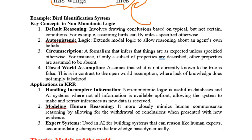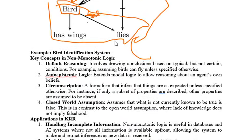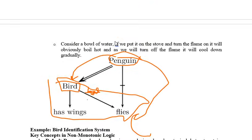The next application is modeling human reasoning. This completely depends on human common sense and new evidence. If you make a conclusion, it should have evidence, and if new information comes in, the evidence can be revised. The third application is expert systems. That covers the applications of non-monotonic logic.